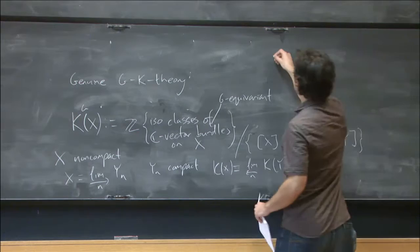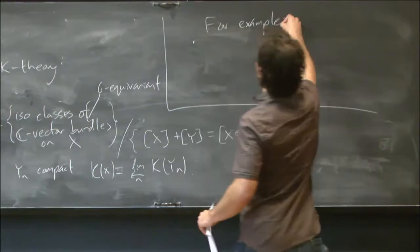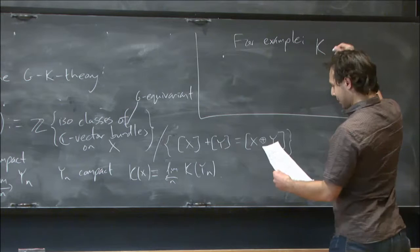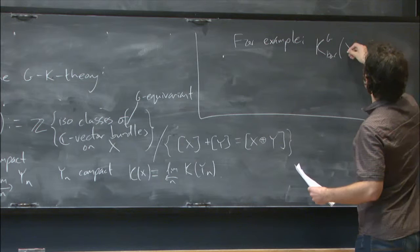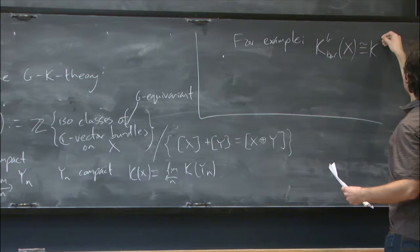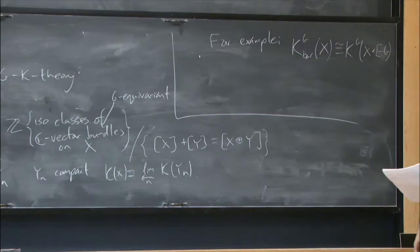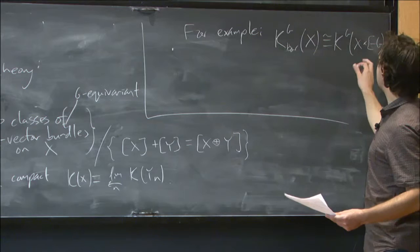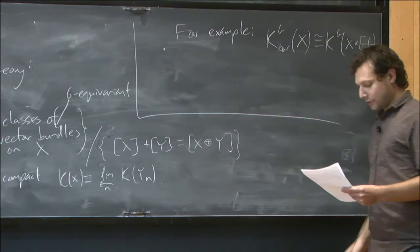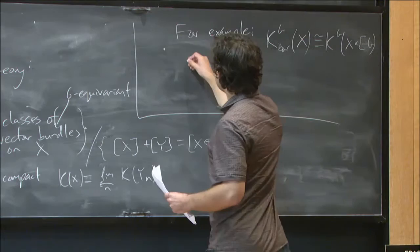And so note that this is strictly stronger than the Borel equivariant K-theory I could define that way, because if I wanted the Borel equivariant K-theory of X, I could just take the genuine equivariant K-theory of X cross EG, which is not completely obvious, but I'll leave that for the moment. And on the other hand, the genuine equivariant K-theory of X and of X cross EG are quite different. So let's try to compare these two things. Let's try to compare their values on the point.